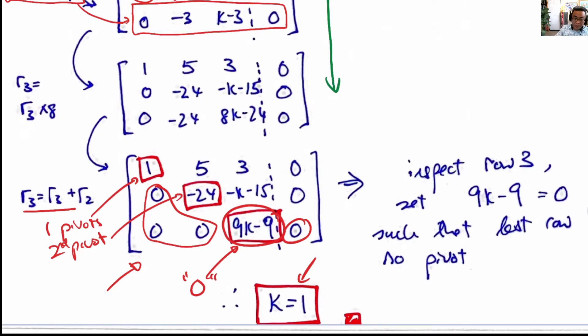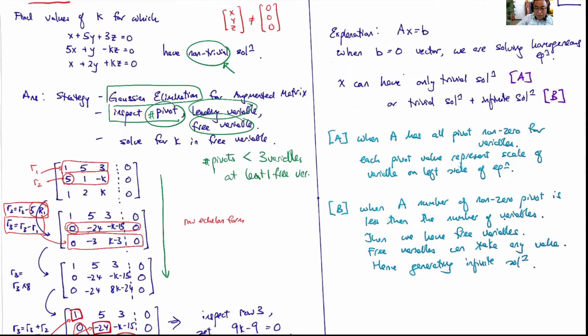That is why we have zero equals to zero. You can read more details of my explanation about pivots and free variables here. Thank you.